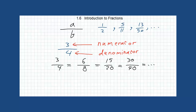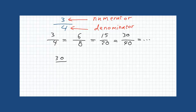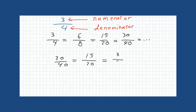In the same way, you can find equivalent fractions by dividing both the numerator and the denominator by a constant number. For example, take 30 over 40 — divide both by 2 and you get 15 over 20. Then divide both by 5 and you get 3 over 4. Now we can't divide 3 and 4 by any constant other than 1, so this is the simplest form of this fraction.